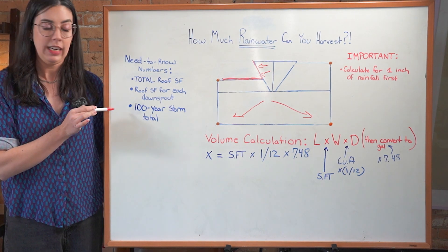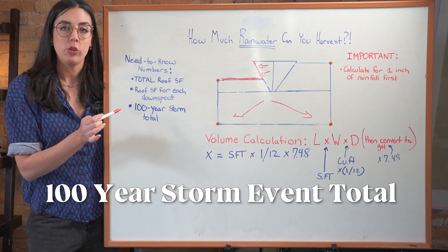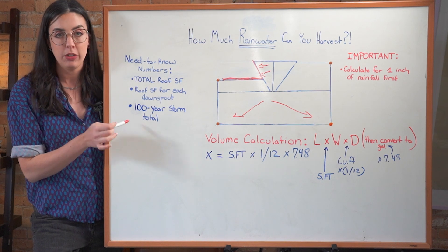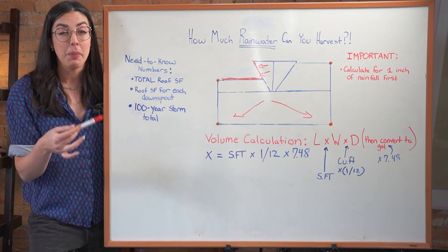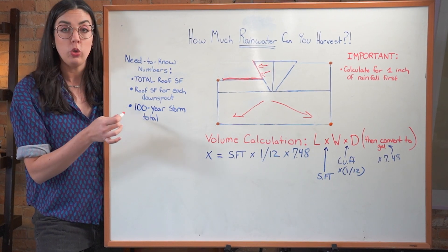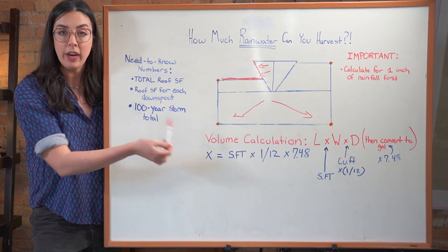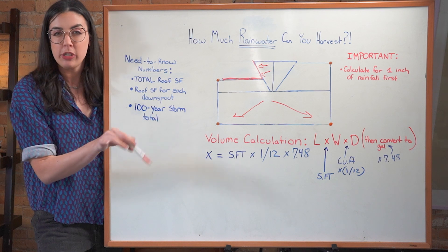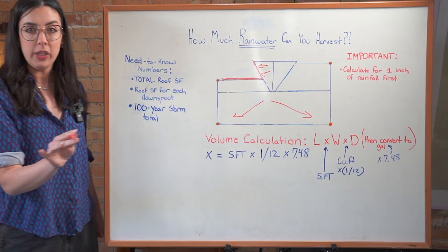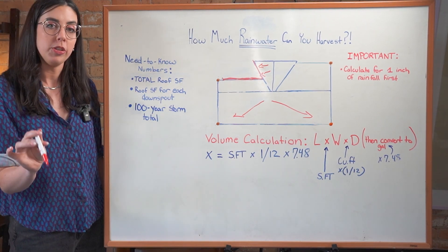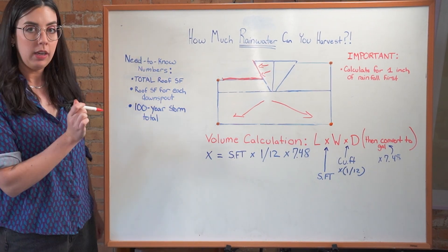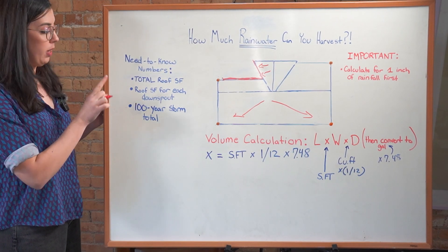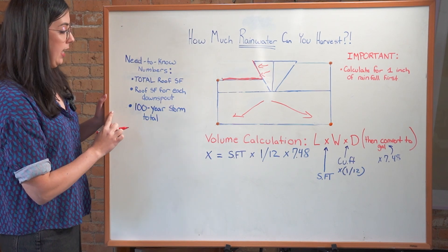Then this one is just a Googling thing. You need to figure out what your 100 year storm event total is. So when it's raining about as much as it's ever going to rain. In Tucson, Arizona, it's three inches. Here in Utah, it's about two inches. You can just Google your city 100 year rainfall, 100 year storm total. Something will typically come up. I also find that weatherspark.com is typically helpful with this.